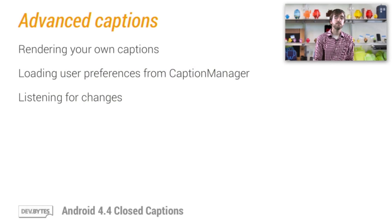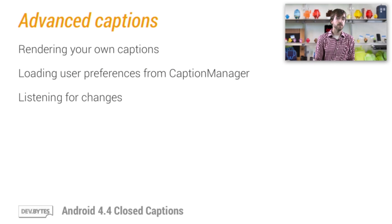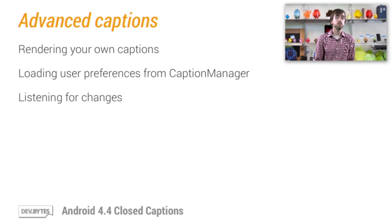Now, we've covered the most basic use case for adding captions to a video view. However, this might not cover all use cases. If video view doesn't fit your needs and you find yourself implementing custom caption rendering, you can still respect the user's captioning preferences by loading information from the Caption Manager service. You can read more about this class, including use examples, at developer.android.com.